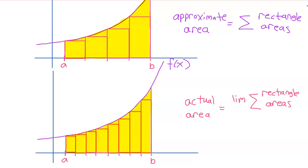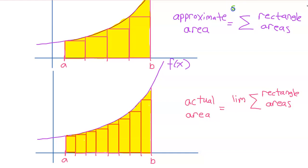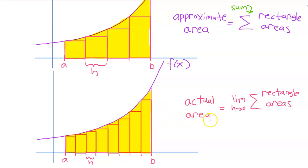The bottom line is our approximate area is the sum of all the rectangles — and that's what this Greek letter sigma means: the sum. So the sum of all the rectangle areas is the approximate area. But if we label the width of these rectangles as h, like we did in the previous example, then the actual area will be the limit of this sum as h approaches 0. In other words, as the width of these rectangles gets smaller and smaller, the area we are approaching will be the actual area under the curve. We will work through that in future videos.